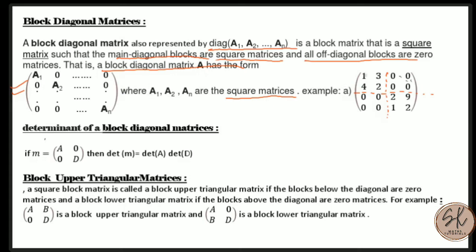For example, here is a 4×4 matrix partitioned equally into 2×2 matrices. This is a square block matrix and also a block diagonal matrix because the off-diagonal blocks are null matrices, while the diagonal blocks are the non-zero matrices.